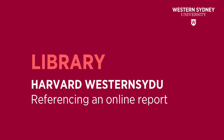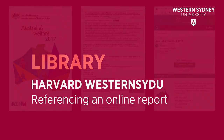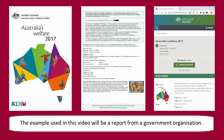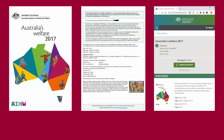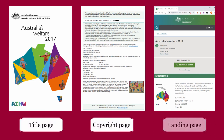This guide will show you how to reference an online report used in the Harvard Western CU referencing style. The example used in this video will be a report from a government organization. The details for citing an online report are usually found on the report's title page, copyright page, and report landing page.